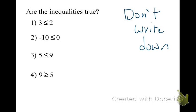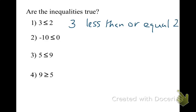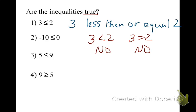Don't write this down — we're just going to be discussing it. Let's take a look at example number one. This is telling us 3 is less than or equal to 2. Is 3 smaller than 2? No. Does 3 equal 2? No. So is this a true statement? No — this is going to be false. You have to be aware of what the inequality sign means.